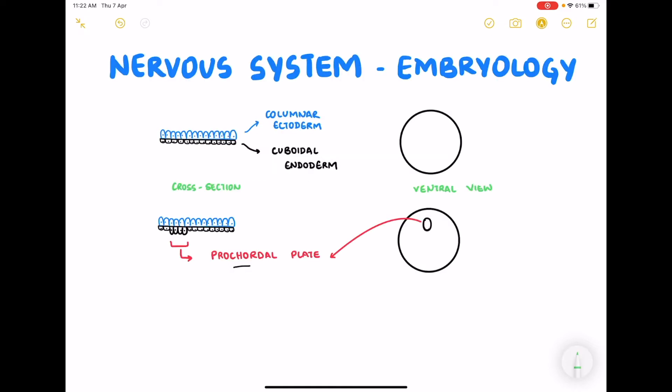Let us start with the two-layered stage of the embryo and understand the development of notochord and the neuroectoderm and the further development of the nervous system. So over here we have the columnar ectoderm and the cuboidal endoderm. Just for the orientation there is amniotic fluid on this side and there is yolk sac on the side.